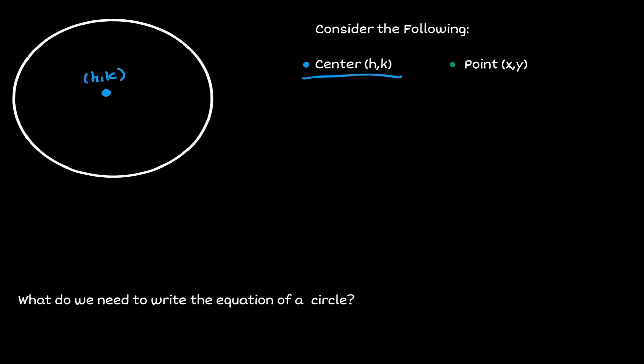Now we're going to choose a point on the circumference of the circle and give it the location x, y. If we connect the center of the circle to this random point, we're going to define the radius of the circle. If we were to have chosen any other point on the circumference, we would also define the radius of the circle.